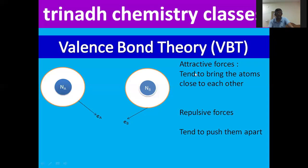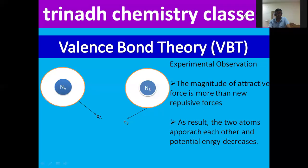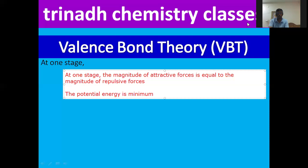Attractive forces tend to bring the atoms closer together, whereas repulsive forces tend to push them apart. Experimentally, it is observed that the magnitude of attractive forces is greater than the repulsive forces. As a result, the two hydrogen atoms approach each other and the potential energy decreases. At one stage, the magnitude of attractive forces becomes equal to the magnitude of repulsive forces — that is, attractive forces are balanced by repulsive forces — and the system's potential energy becomes minimal.